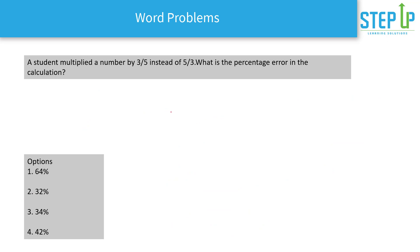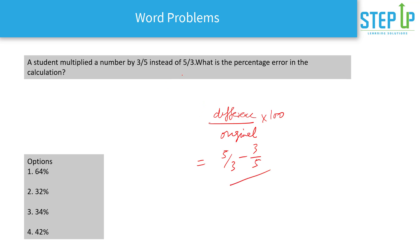The last question: a student multiplied a number by 3/5 instead of 5/3. Calculate the percentage error. Percentage error means: (correct value − incorrect value) / correct value × 100. The correct multiplier was 5/3 and the wrong one was 3/5. So: (5/3 − 3/5) / (5/3) × 100.